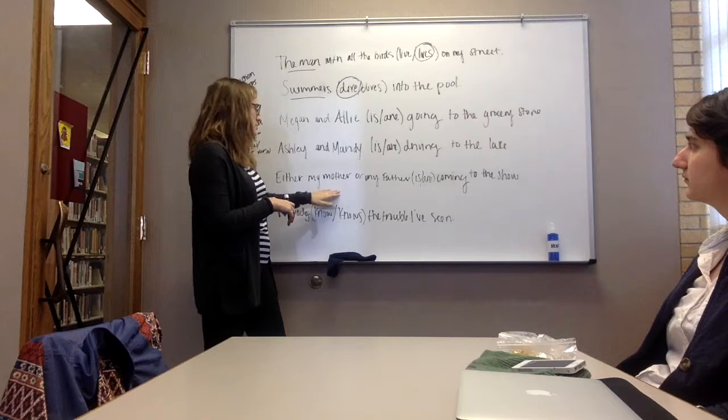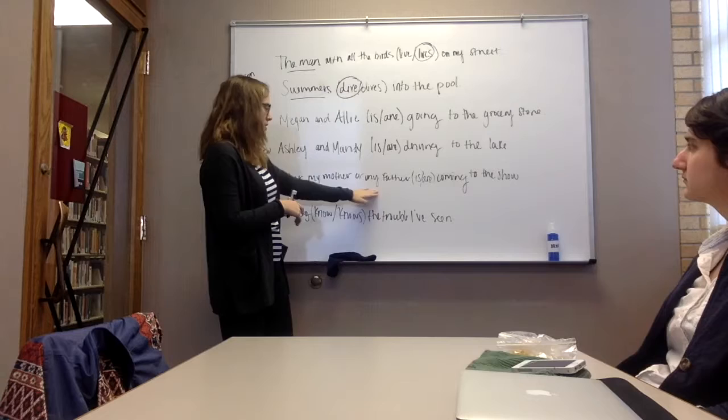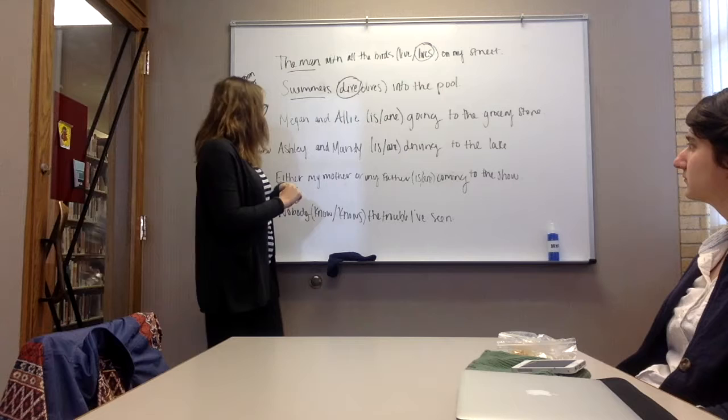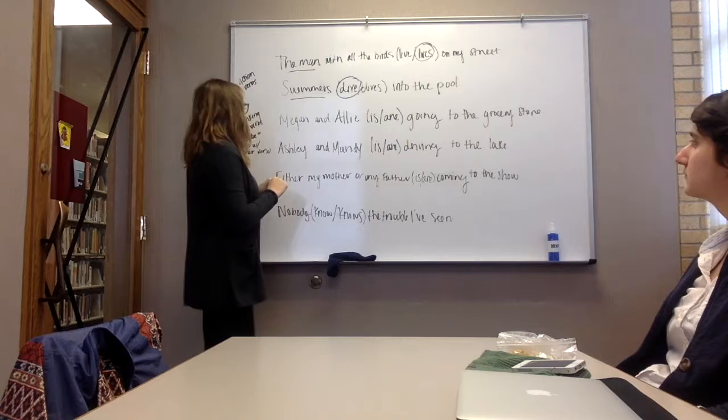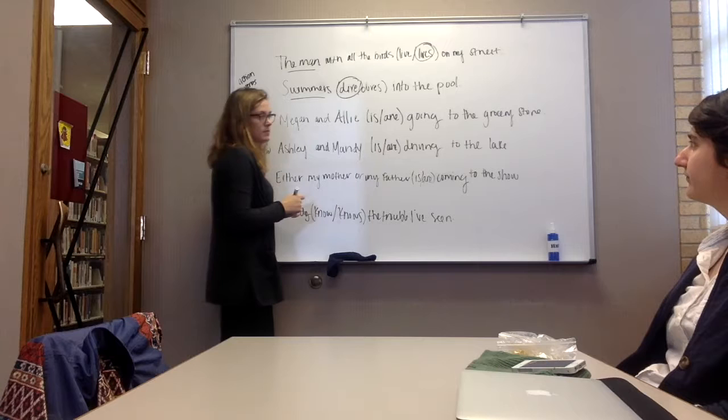So, it will have a plural verb. And then, when a sentence has two subjects and it's joined by or, that creates a singular subject, because you're picking one or the other, and so your verb will also be singular. So, we're just going to go over a couple of sentences with that. The first sentence is, Megan and Allie is or are going to the grocery store? Are. Are.